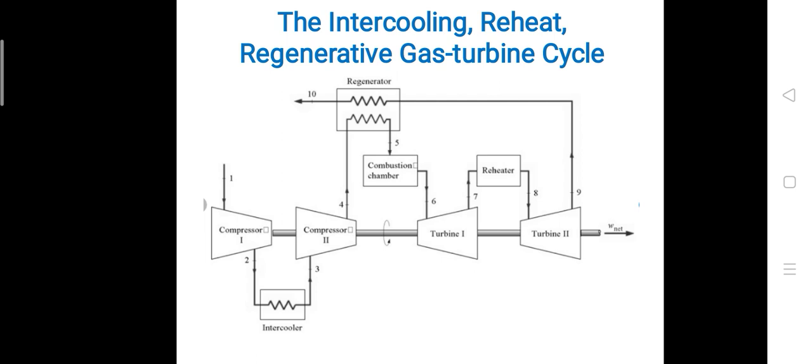The hot gas passes to turbine 1, which is the high pressure turbine — HPT. Inside the high pressure turbine the gas expands, rotating the turbine blades and in turn rotating the shaft.